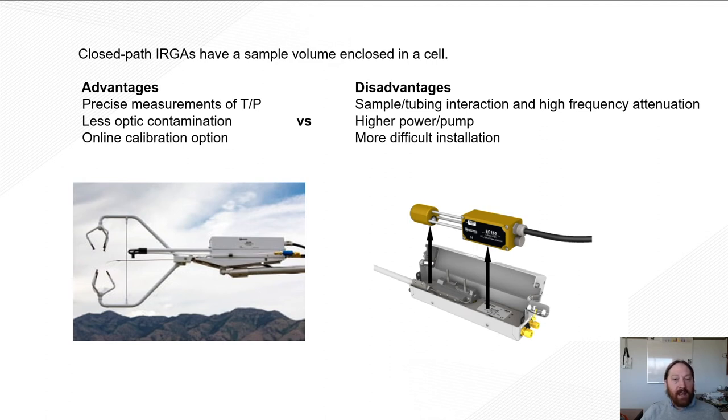Also, there's some online calibration options with our systems. So with our CPEC-310, our closed path system, you can add an optional tank of zero air and tank of CO2 span gas and use a valve module under datalogger control to perform an online calibration on an interval that you set.